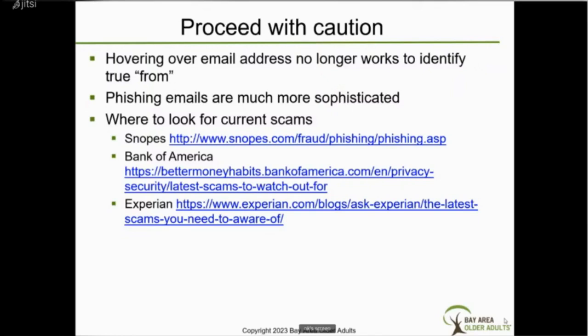If you get an email that is not from someone you know or from a company you recognize, you can check three websites — Snopes, Bank of America, and Experian — to see if the sender is already listed as a scam.